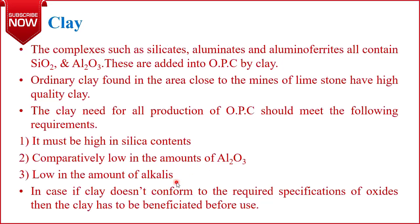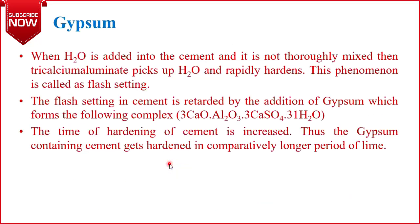We require low amounts of aluminium oxide and alkalis in clay, and a high amount of silica, because silica reacts with calcium oxide to form cement. Now, most of you have seen the process of preparing a cement mixture with sand before applying it to walls. When we add water into cement — cement that does not have gypsum in it — and it is not properly mixed, the tricalcium aluminate part of the cement will rapidly absorb water and harden. This phenomenon is known as flash setting.